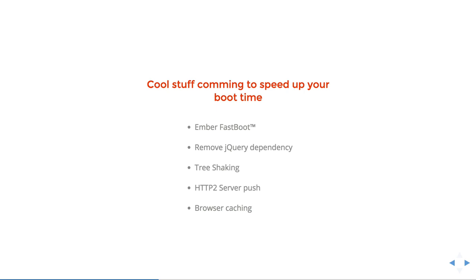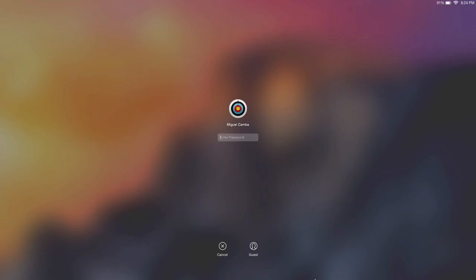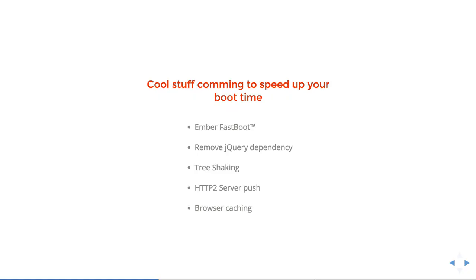Another thing people are working on is removing jQuery as a dependency. We want HTML to be lightweight, and it's not. The first step is to remove things that are not mandatory and make them optional — jQuery should be one of them. Another is tree-shaking, which will be much easier when ES6 modules are finished. The idea is: if you have an app that only uses part of Ember, why load all of Ember? If you can know in advance which parts of Ember you're using, you can make a custom build with only the things you need.